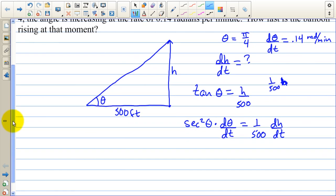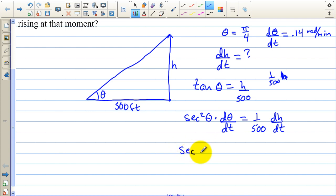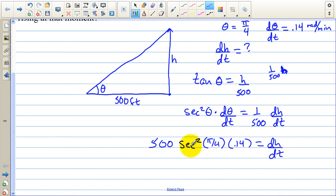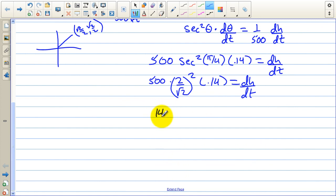Now we fill in what we know and we solve for what we don't know. We do know that theta is pi over 4, so we have the secant squared of pi over 4. d theta dt is 0.14, so we're going to take this times 0.14. And then if we multiply the 500 over we have 500 equals all of that and that's going to be what our dh dt is. The secant of pi over 4 is square root of 2 over 2. Secant is the reciprocal of cosine. So I need on the calculator to find what 500 times 2 over square root of 2 squared is and then times 0.14. And that is 140 feet per minute.